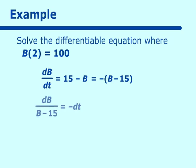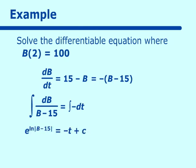Separating variables gives db/(b - 15) = -dt. Taking the antiderivatives, we get ln|b - 15| = -t + c. We solve for b by raising everything to e: b - 15 = e^c · e^(-t), so b = 15 + e^c · e^(-t).